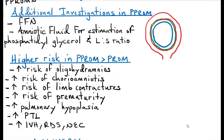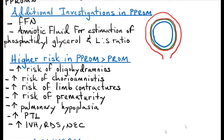Preterm labor is a complication of PPROM. Once rupture of membranes occurs, there is a 60 to 90% chance of the patient going into labor. In PPROM, that means preterm labor, which is from 28 weeks gestational age to less than 37 weeks gestational age, before the pregnancy has reached term.